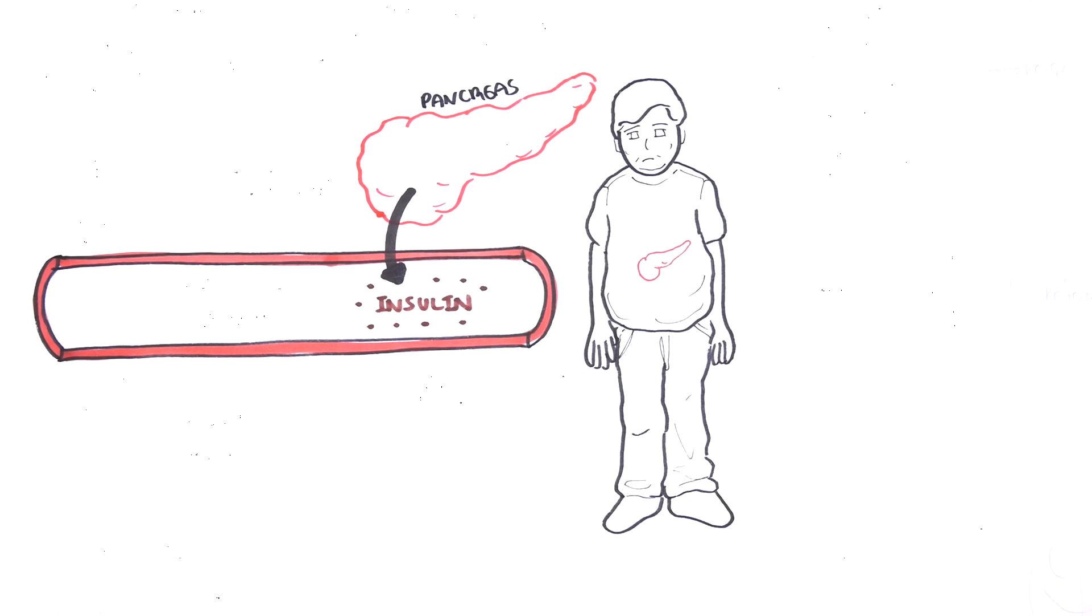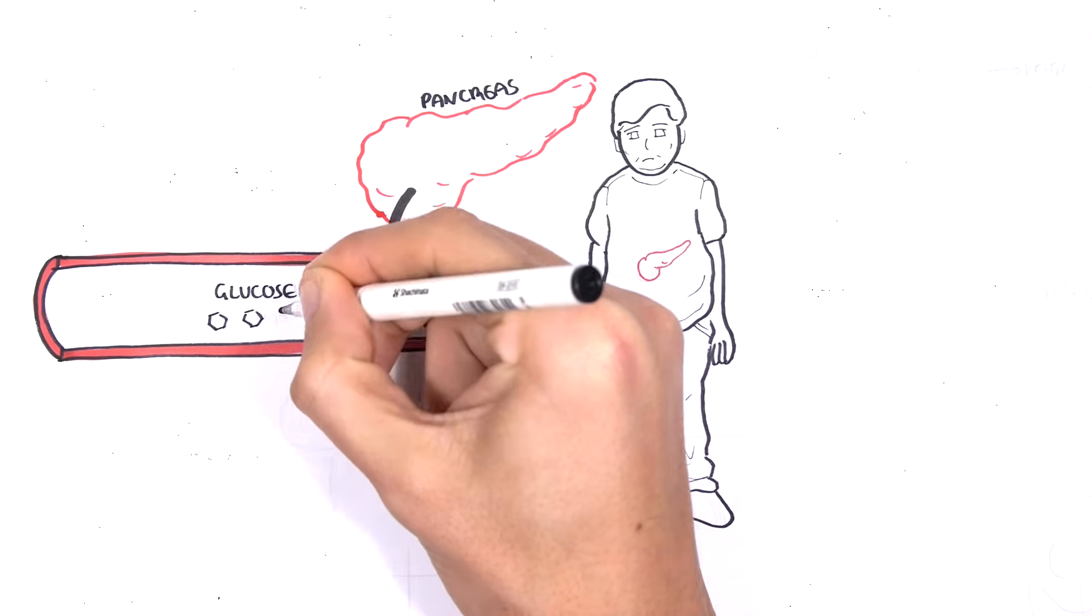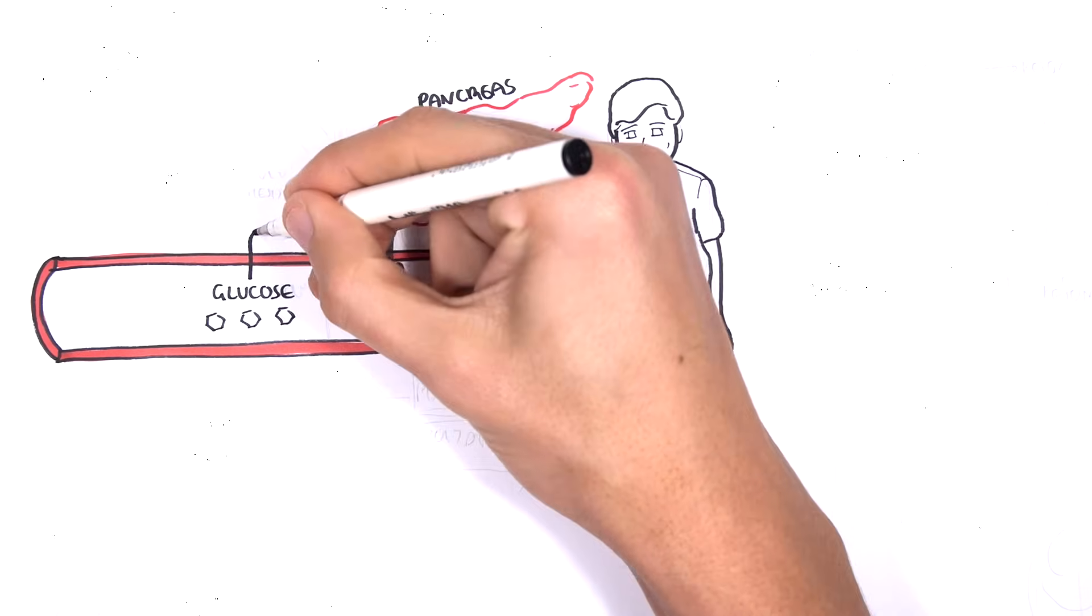One of these hormones is insulin, which is produced in response to high blood glucose. An example is after we eat, glucose enters our blood and then it will stimulate the pancreas to produce insulin.